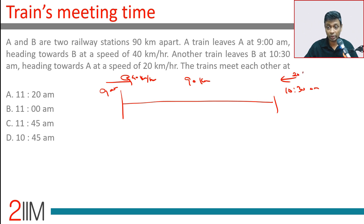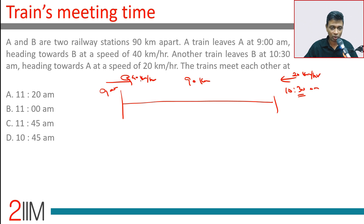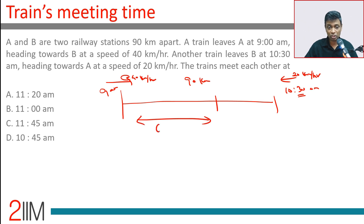The second train heads towards A at 20 kilometers per hour. At 10:30 a.m., that's one and a half hours after 9 a.m., so Train 1 traveling at 40 kilometers per hour would have traveled 60 kilometers. So Train 1 is at the 60 kilometer point at 10:30.